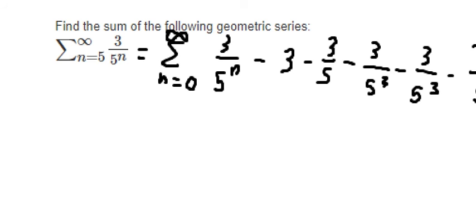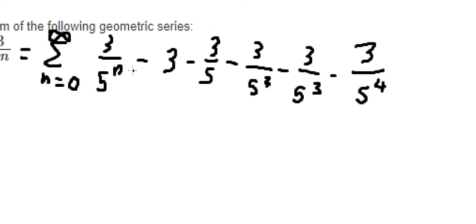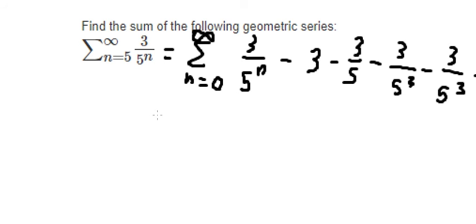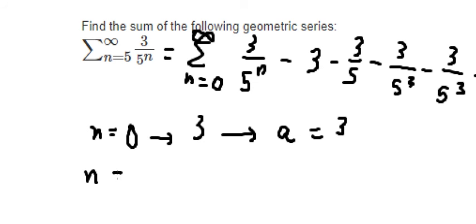At the beginning, when n equals 0, you get 3, and this should be a. When n equals 1, you get 3 over 5, which is 3 multiplied by 1 over 5. We know that 3 is a, so this one...